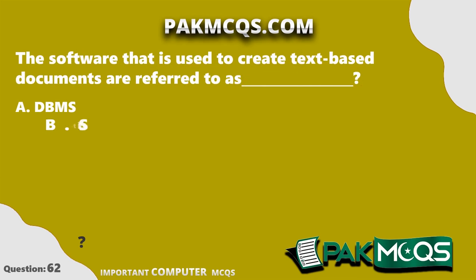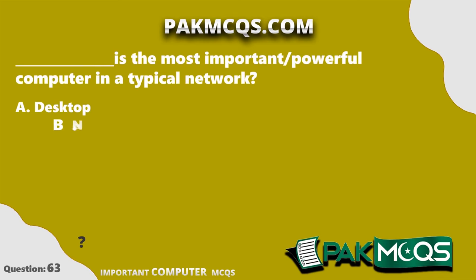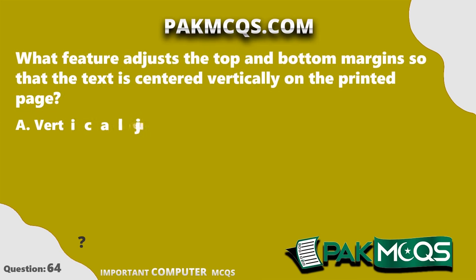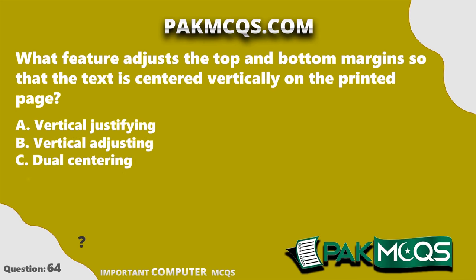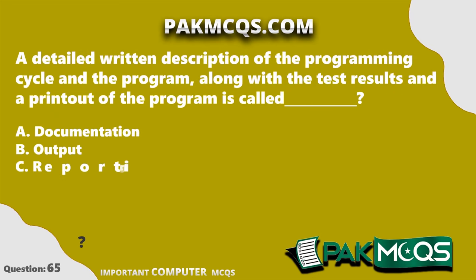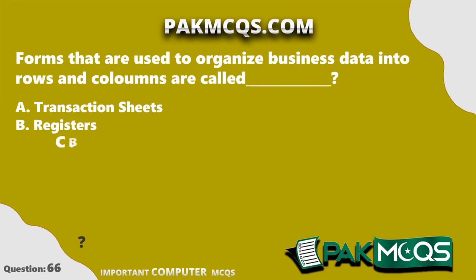Software used to create text-based documents is referred to as word processors. The network server is the most important and powerful computer in a typical network. The feature that adjusts top and bottom margins so that text is centered vertically on the printed page is vertical justifying. A detailed written description of the programming cycle and the program, along with test results and a printout, is called documentation. Forms used to organize business data into rows and columns are called spreadsheets.